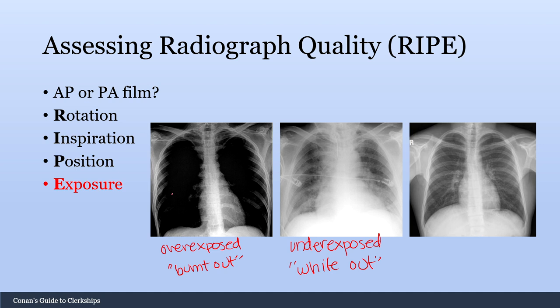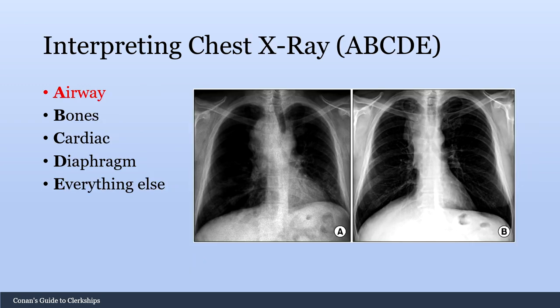Now that you've completed your assessment of the radiograph quality with RIPE, you can move on to interpreting the chest x-ray with the ABCDE mnemonic — a sequential order to ensure you don't miss anything when assessing a radiograph.